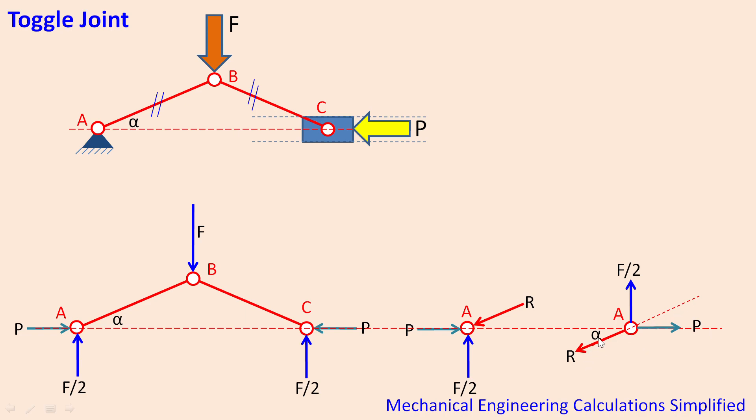This vertical force F by 2 will not have any horizontal reaction, so the horizontal component of reaction R will be R cos alpha.